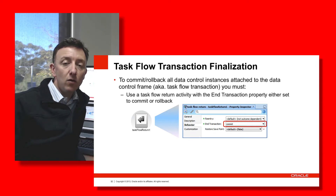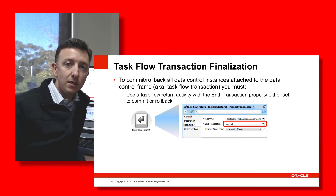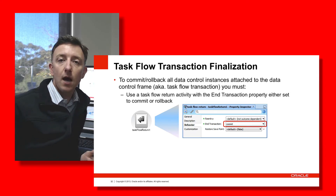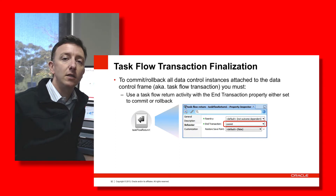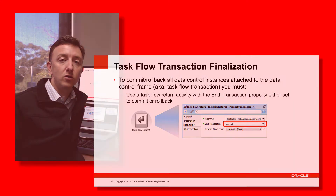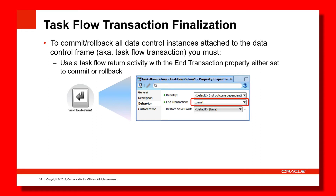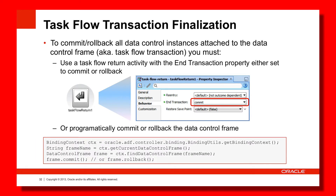The activity of issuing a commit via the task flow return activity means the data control frame may have one or more heterogeneous data control types or instances associated with it, and this will cause all of those to commit. Rollback does the opposite — it tells all the underlying data control instances to rollback and undo any work done since the beginning of the data control frame or the original task that started the transaction on the controller. There is also a programmatic solution for this: from your managed beans at the view controller layer you can grab the current data control frame and via that data control frame, with a little bit of code, you can also issue commit and rollback commands.